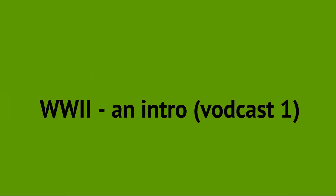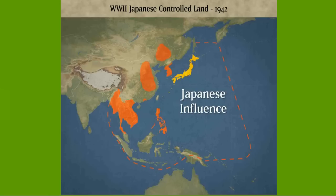Over the course of several years, from 1931 to 1945, many European and Asian countries were attacked and taken over by Germany and Japan in their attempts to dominate the Eastern Hemisphere. Japan focused on the mineral-rich China and the United States at Pearl Harbor.